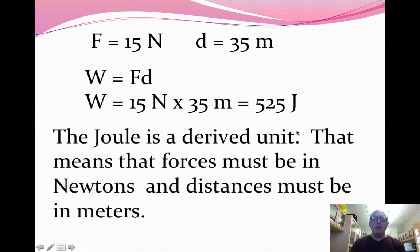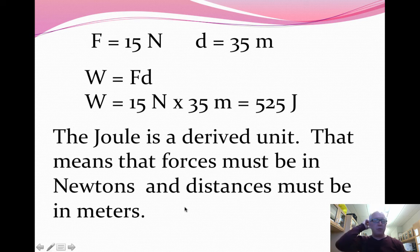The joule is a new unit for us. You might have seen it in chemistry, but for physics, it's a new unit, and it is a derived unit. If we multiplied newtons by meters, we would get newton-meters, but newtons multiplied by meters is the derived unit, joules. That means you must be in meters, and you must be in newtons in order to get an answer that comes out in joules.